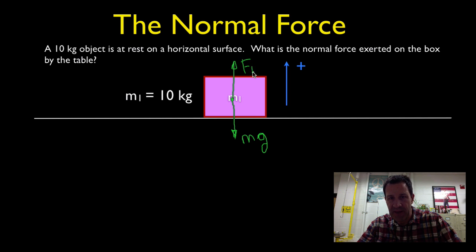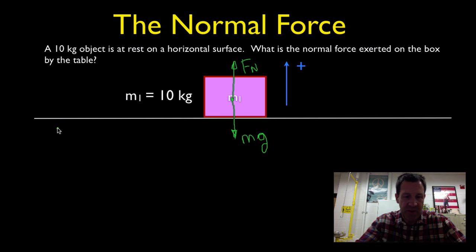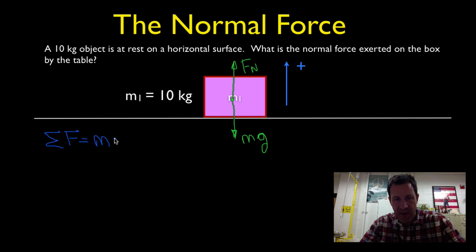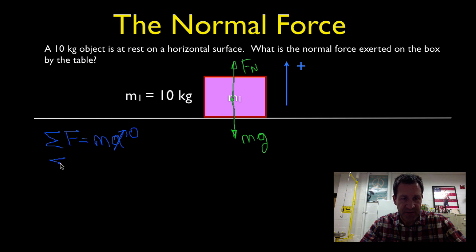We're going to label the normal force as FN. Now we're going to use Newton's second law. We define up as the positive direction. Newton's second law says the sum of the forces, sigma F, is equal to ma. Since the object is at rest, the acceleration is zero, so zero times the mass is zero. We're going to simplify this to say that the sum of the forces is equal to zero.